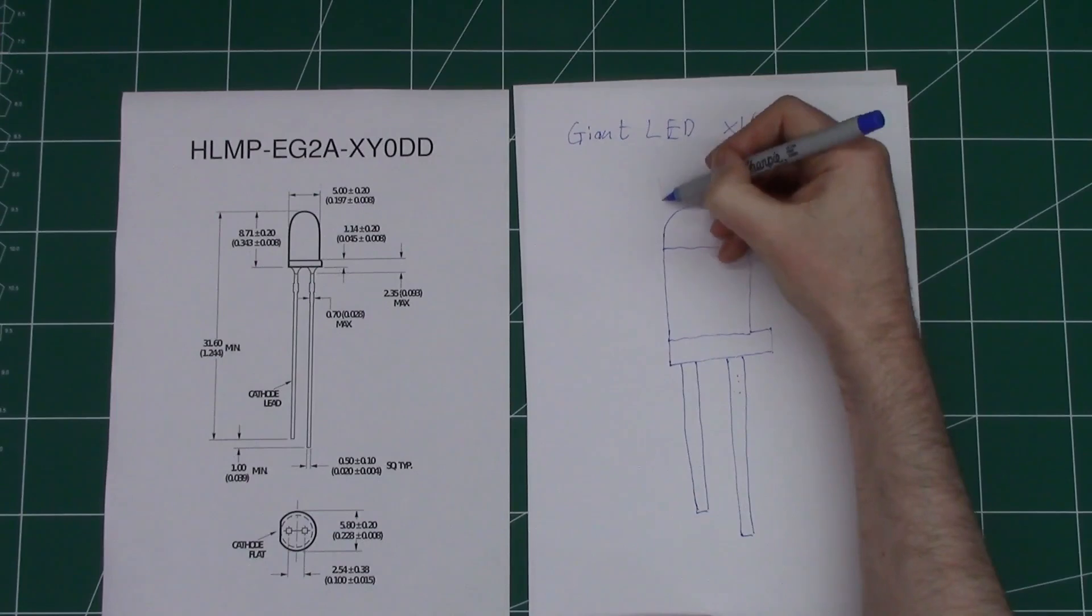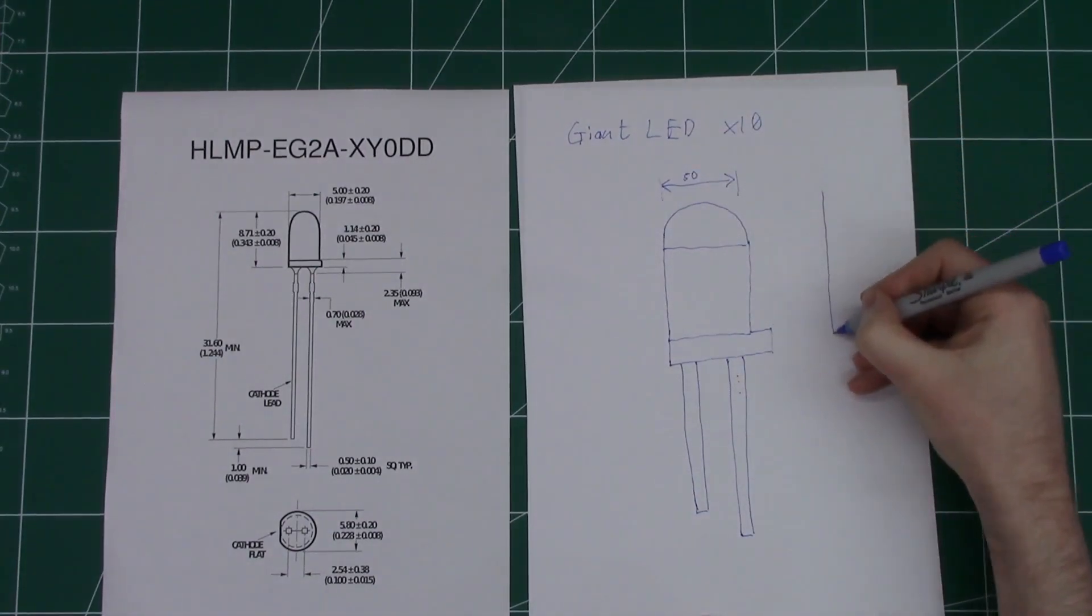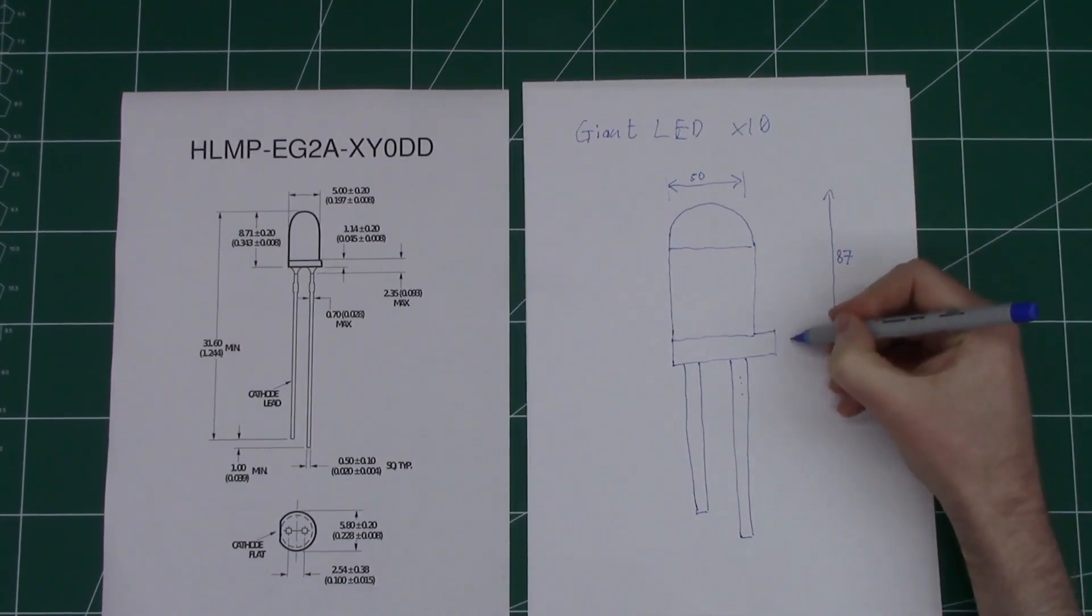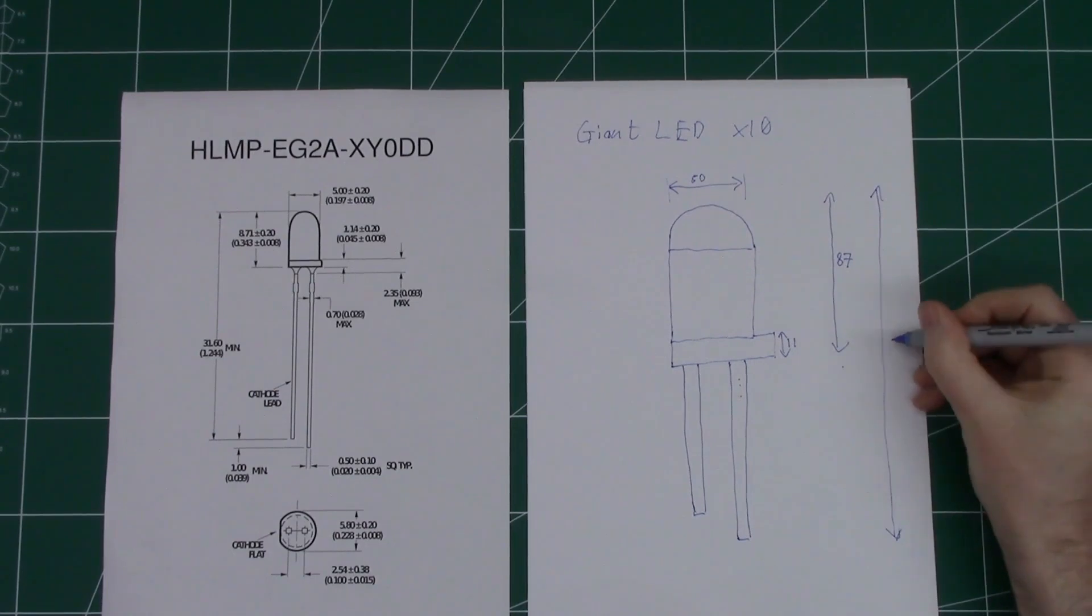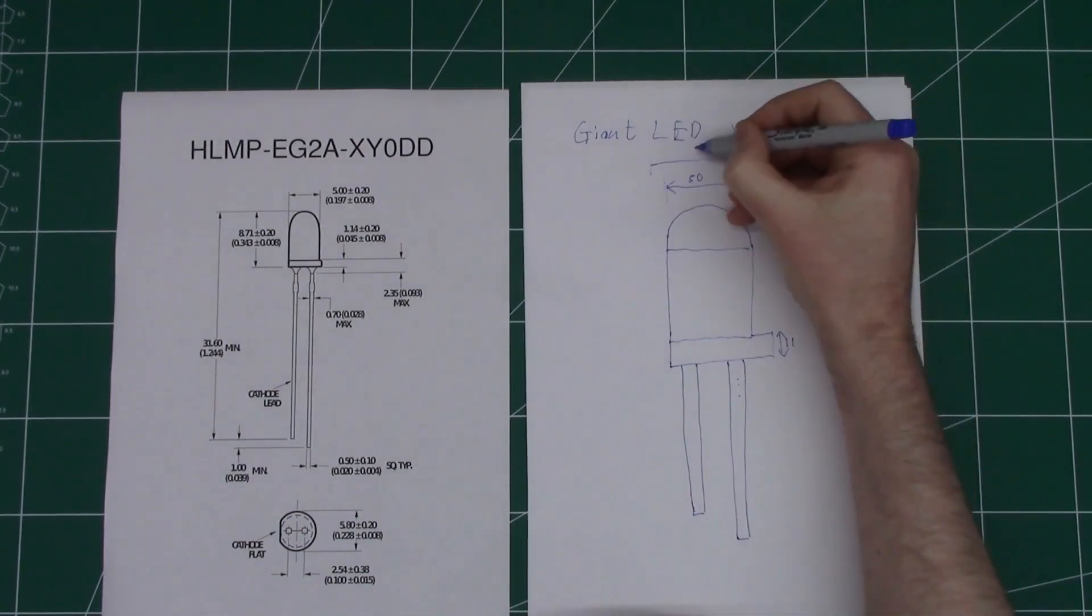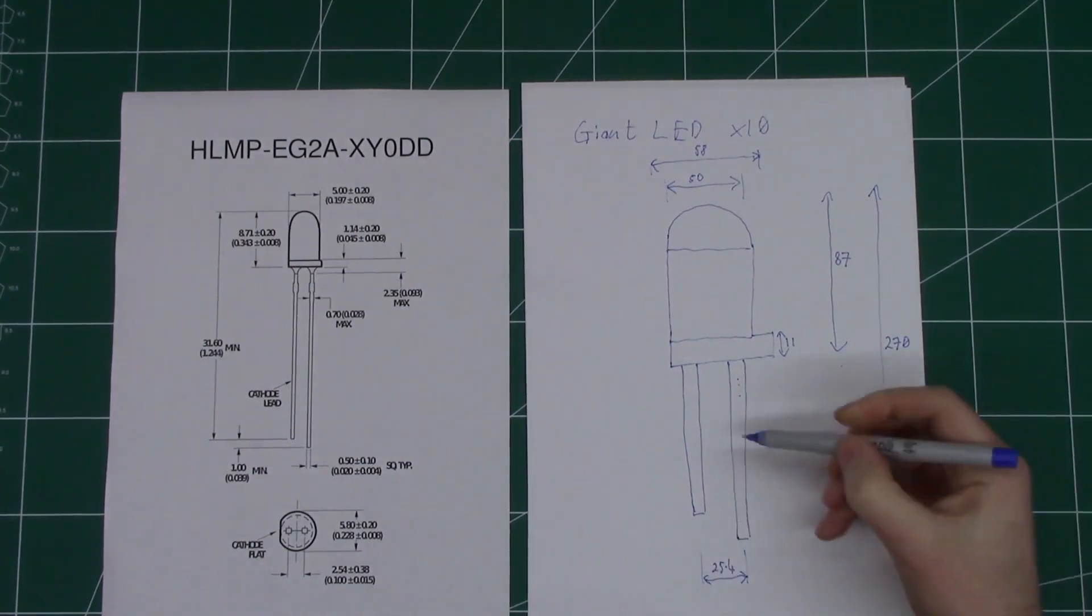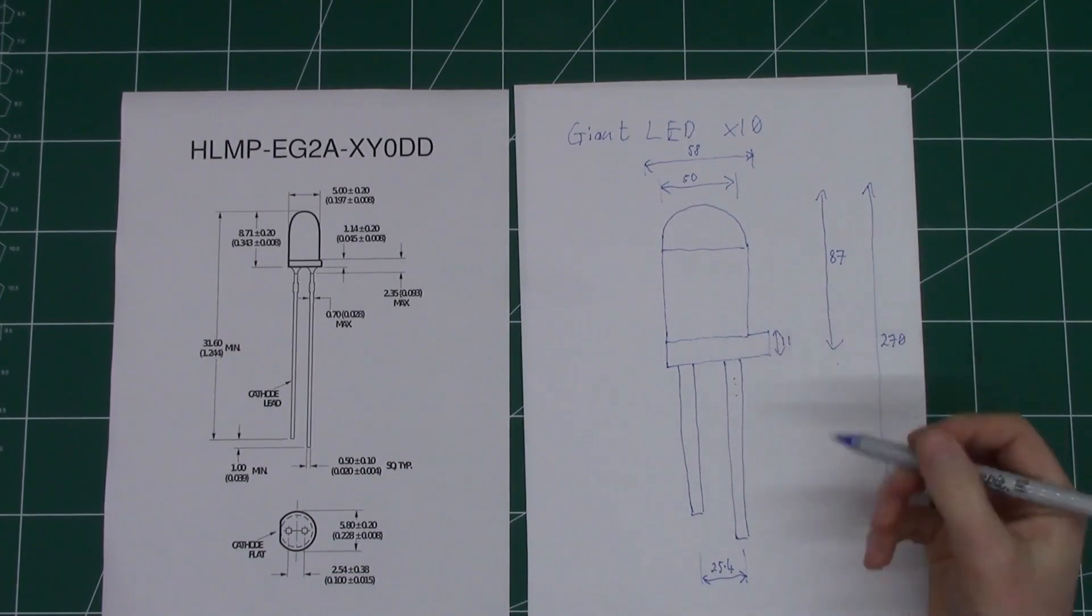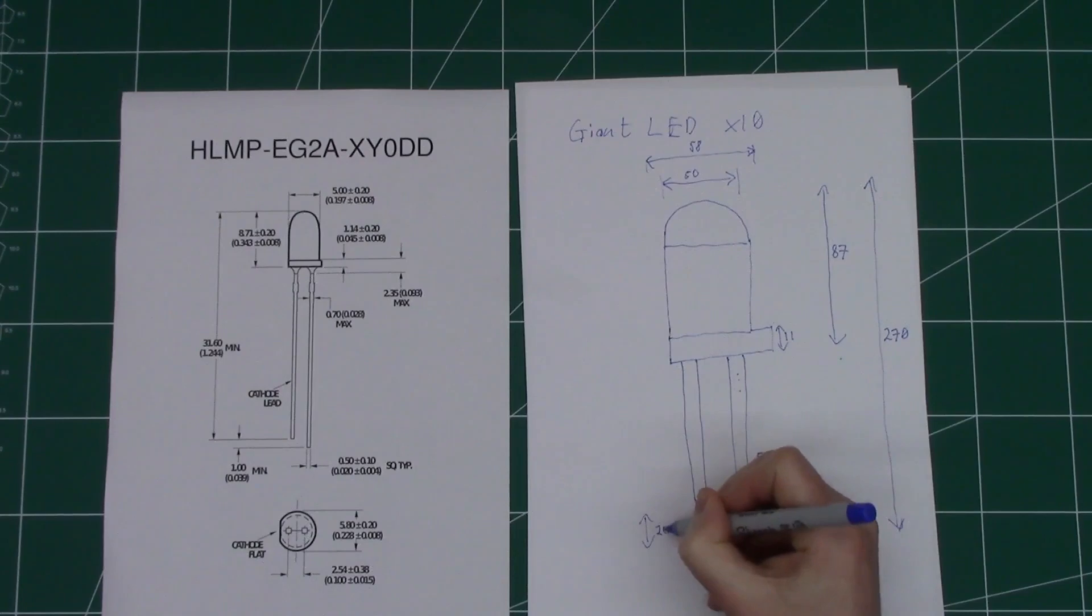The dimension of the body is 50 millimeters. The overall height of the LED bulb is 87, the lip is 11, and the overall length 270 millimeters. The diameter of the lip is 58, the centers between the leads 2.54, and these legs I'm going to try and make square 5.5. This leg is slightly shorter by 20 millimeters.